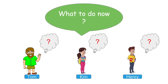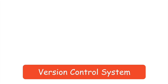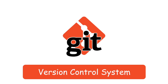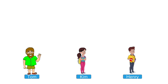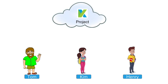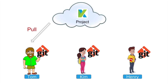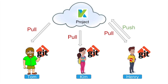We need a solution which can manage all our changes and version controlling in an automated way. The answer is using a version control system like Git. The team can put their project on a remote repository or any common location, and every member will install Git on their system. They can then do a pull from the common repository to get a local copy, work on their local copy, and whenever they want, push it back to the remote repository. Git will take care of all the changes and version controlling.